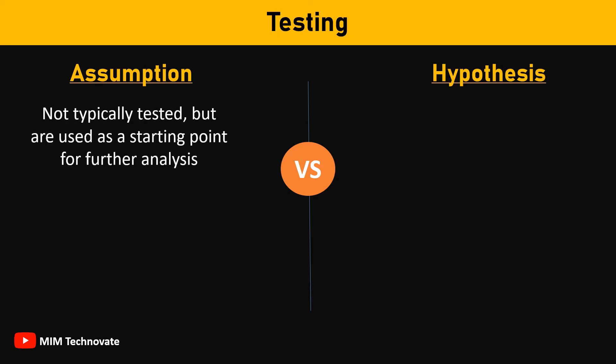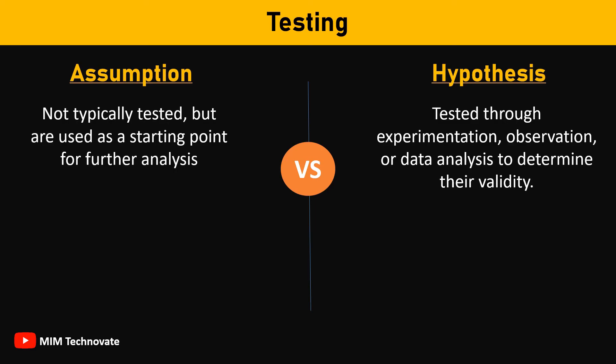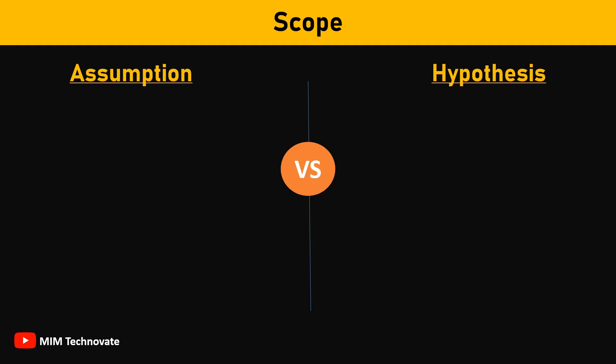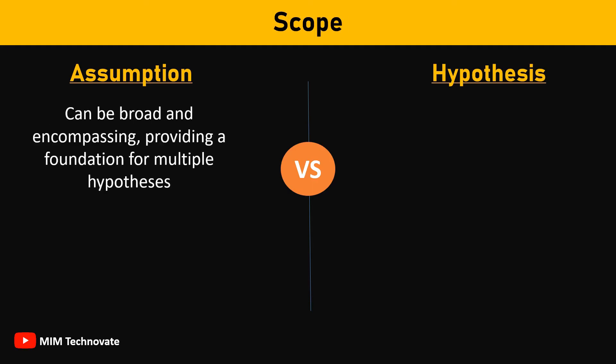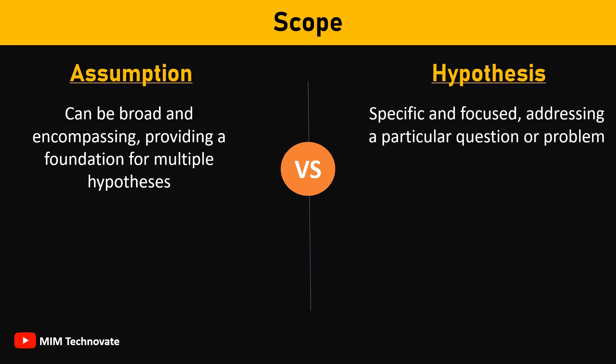Assumptions are not typically tested, but are used as a starting point for further analysis, while hypotheses are tested through experimentation, observation, or data analysis to determine their validity. In terms of scope, assumptions can be broad and encompassing, providing a foundation for multiple hypotheses. On the other hand, hypotheses are specific and focused, addressing a particular question or problem.